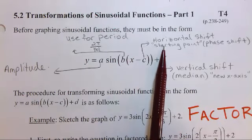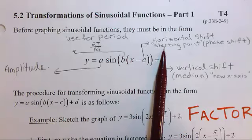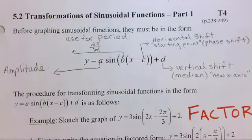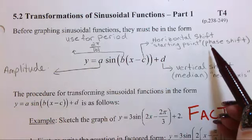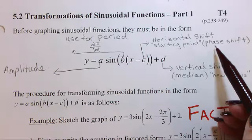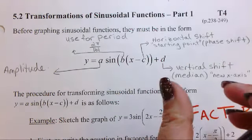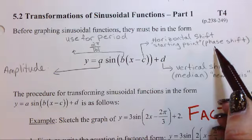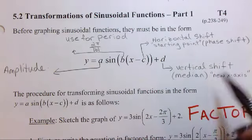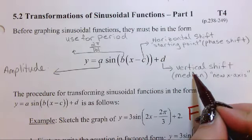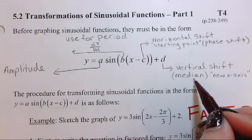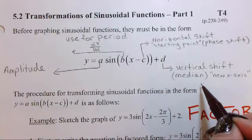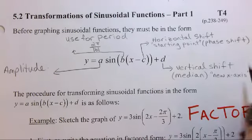Now, C is a horizontal shift, or it's the starting point of our one cycle. And we could also refer to this as a phase shift. So if you're looking at just shifting over the entire full one cycle, the full period, then that's where it's going to start from. D is our vertical shift, and it's also known as the median. So it's like the midline of our up-down kind of thing. We could also look at it as our new x-axis.